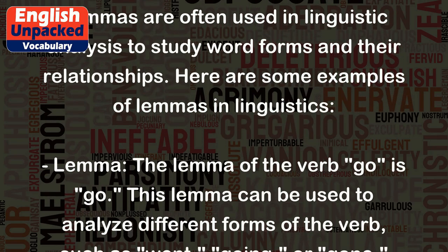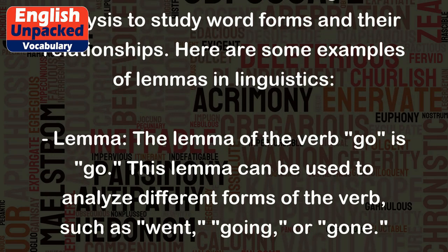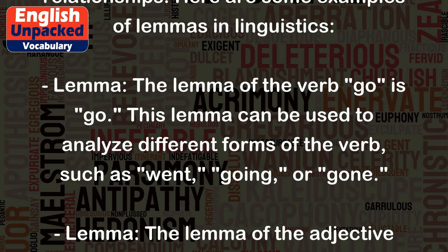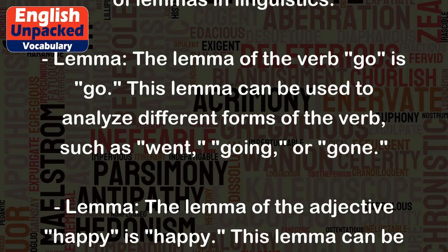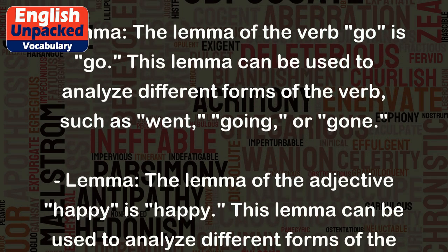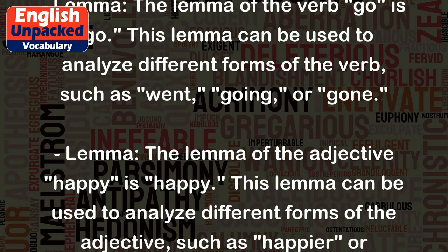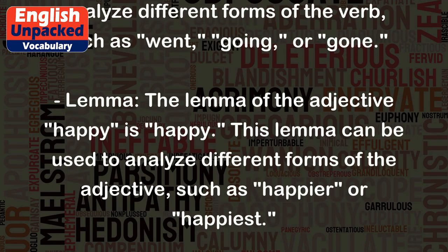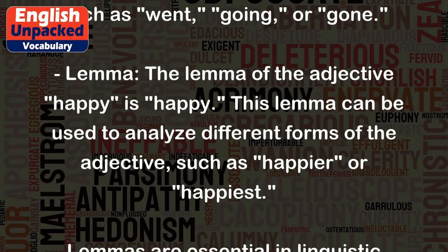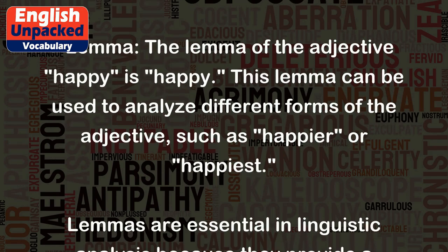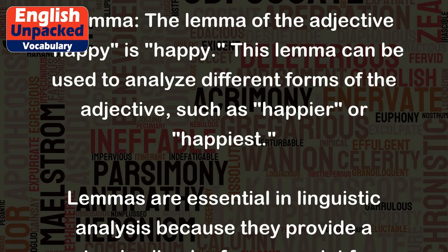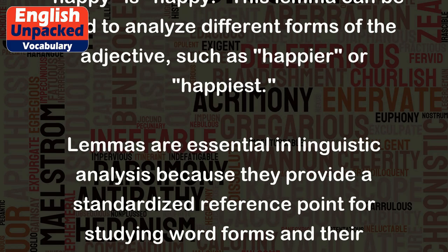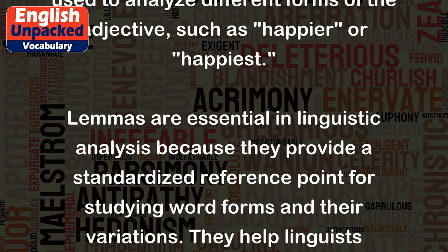Here are some examples of lemmas in linguistics. The lemma of the verb 'go' is 'go.' This lemma can be used to analyze different forms of the verb, such as 'went,' 'going,' or 'gone.' The lemma of the adjective 'happy' is 'happy.' This lemma can be used to analyze different forms of the adjective, such as 'happier' or 'happiest.'